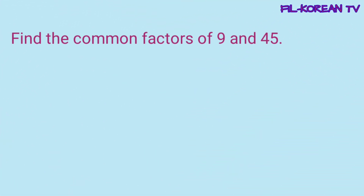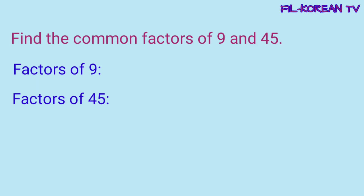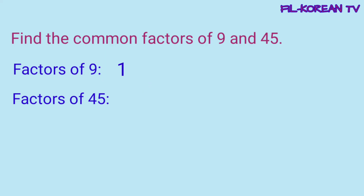Ngayon, gamitin natin ang divisibility rules to find the common factors of 9 and 45. Isulat natin ang lahat ng factors ng 9 at lahat ng factors ng 45. I-apply natin dito yung divisibility rules. Ang 9, isang numero lang siya. At alam naman natin na ang 9 ay divisible ng 3 at divisible ng 9. So, may factors na siya na 3 at 9. At syempre, may factor din ito na 1, kasi lahat ng number ay may factor na 1. So, ang factors ng 9 ay 1, 3, at 9.